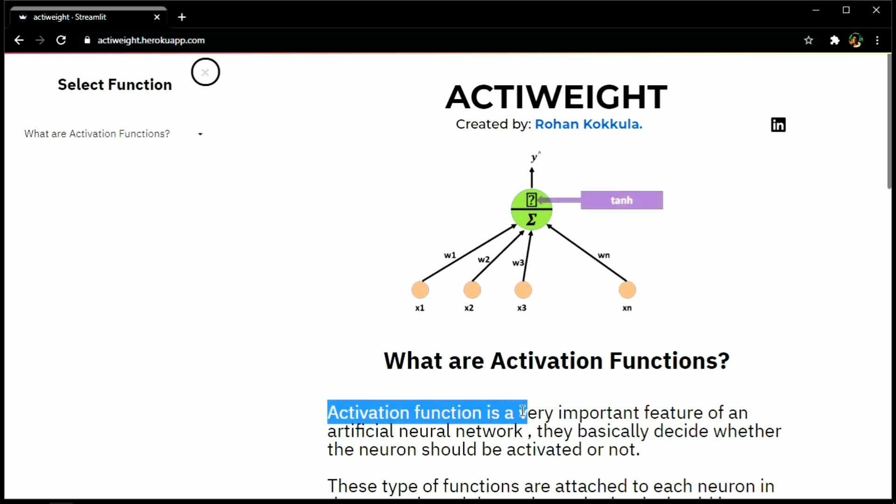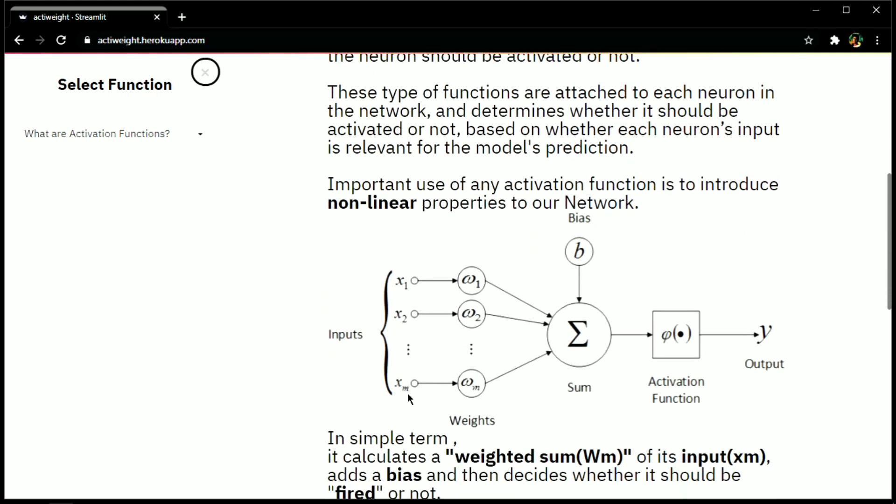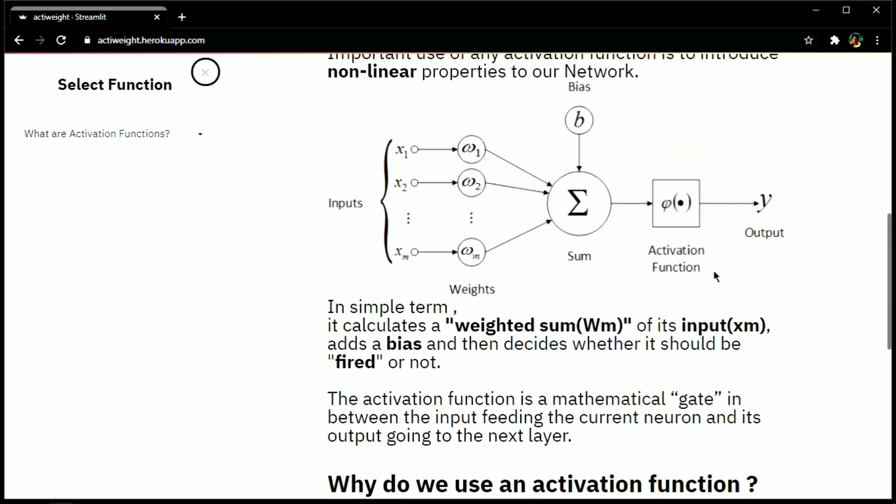So what are activation functions? In a neural network, activation function helps neurons to get activated or not. If you look at the sample model over here, inputs are multiplied with the weights and their summation is added to the activation function along with the bias. The calculated answer is fed as input to the activation function and depending on the threshold of the function, it decides whether to fire it or not.